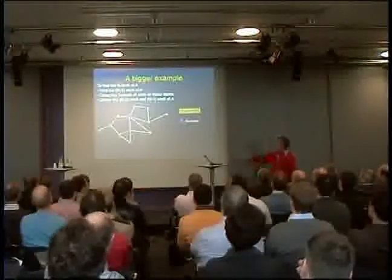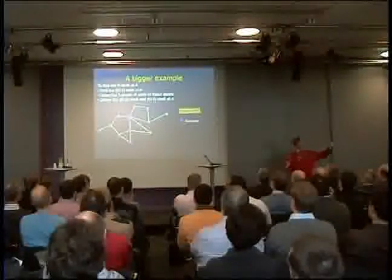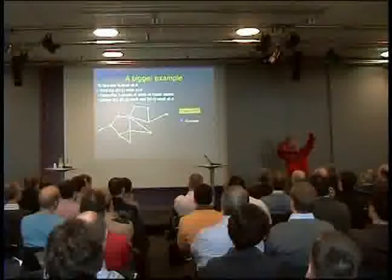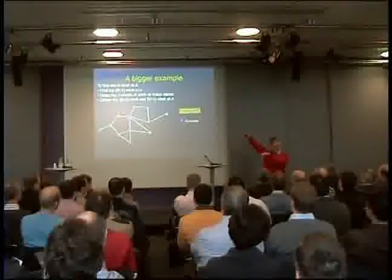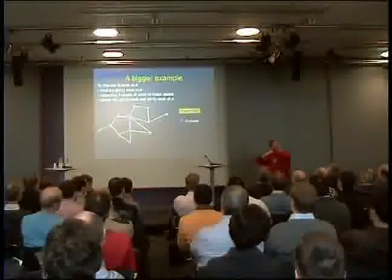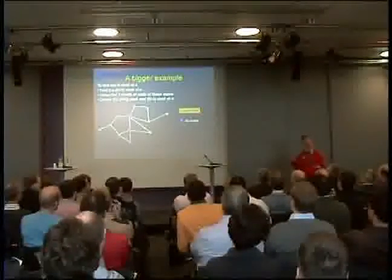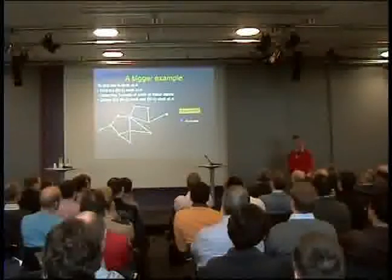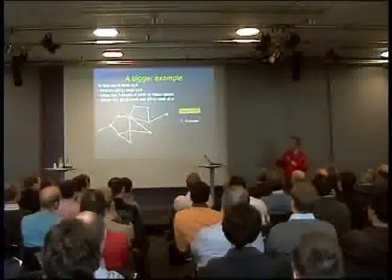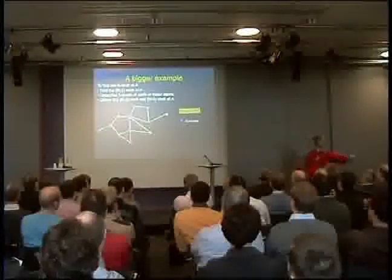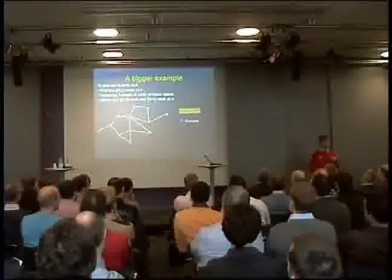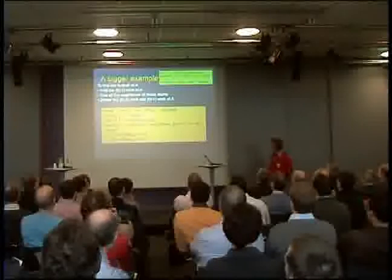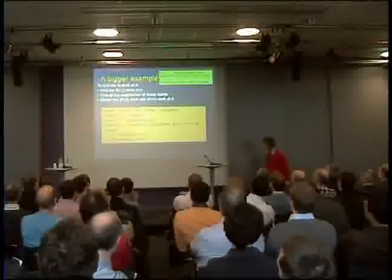Here's the algorithm in English. To find the n shell of atom A: find the n-1 shell, then take the immediate neighbors of all those atoms to reach out one further step. But that also takes you back toward the starting point. So: take the n-1 shell, take all their distance-one neighbors and union them together, then remove the n-1 shell and the n-2 shell. You couldn't get any further back in just one hop. That's the algorithm.